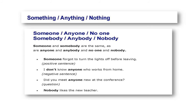Someone, anyone, no one, somebody, anybody, and nobody. Someone and somebody are the same, as are anyone and anybody, and no one and nobody. Someone forgot to turn the lights off before leaving. I don't know anyone who works from home. Did you meet anyone new at the conference? Nobody likes the new teacher.